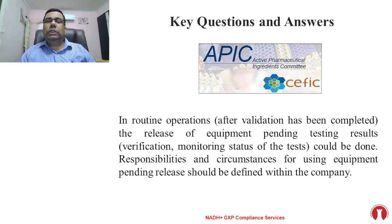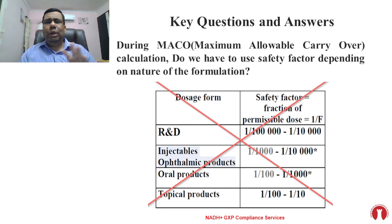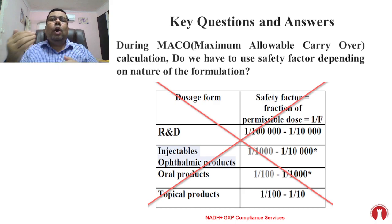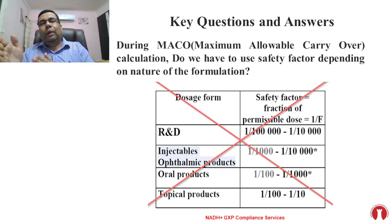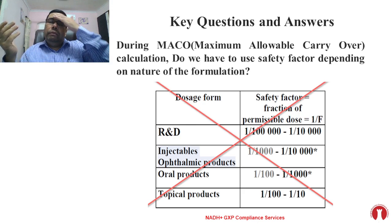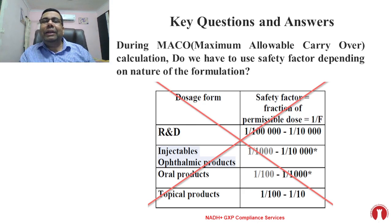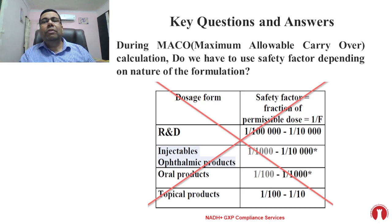The third and last question: during MACO — Maximum Allowable Carryover — calculation, do we have to use a safety factor depending on the nature of the formulation? When going through the calculation, a safety factor is considered. Earlier it was recommended that different factors apply for different product types: R&D, injectables or ophthalmics, topical products — each had a different factor recommended earlier.